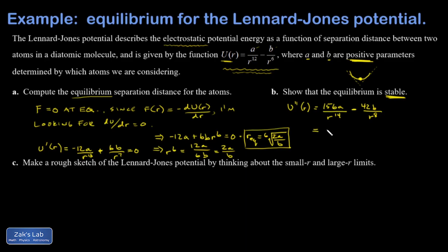And now I've got to somehow make a convincing argument that this is bigger than zero. So I'm just going to try to manipulate it with algebra. Pull out a 1 over R to the 8th. That leaves me with a 156A over R to the 6th minus 42B. And I'm sitting right at R equilibrium. So U double prime of R equilibrium. It's going to be 1 over R EQ to the 8th. And I'm not worried about whether or not that's positive. And then if I plug in R to the 6th, that's 2A over B. So I have 156A over 2A over B minus 42B.